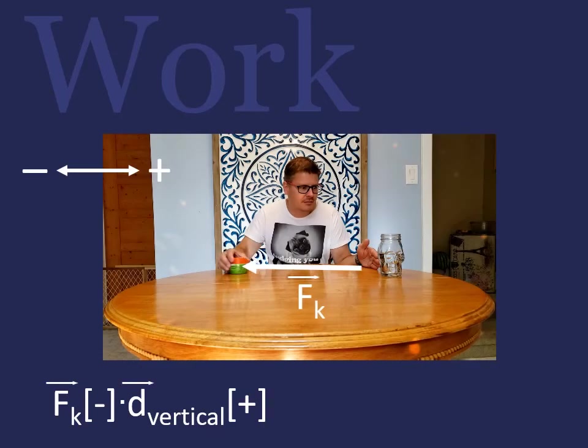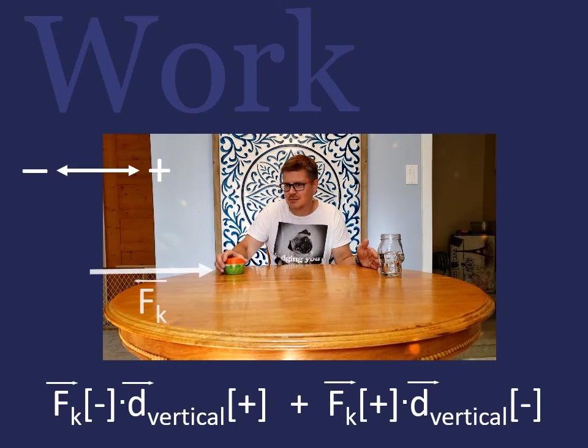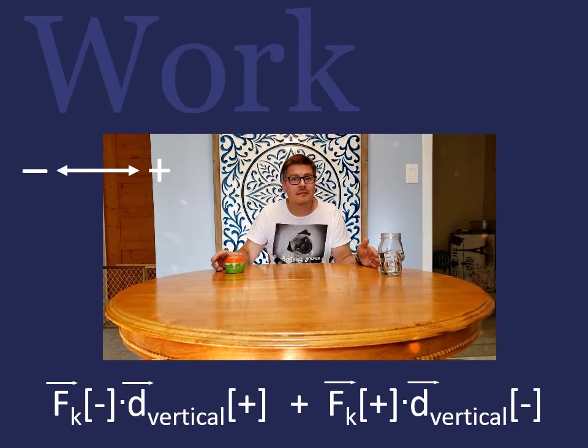Remember, in the example with the weights, when the weights are going down, gravity is not opposing the movement. In this example, friction always opposes the direction of the object.